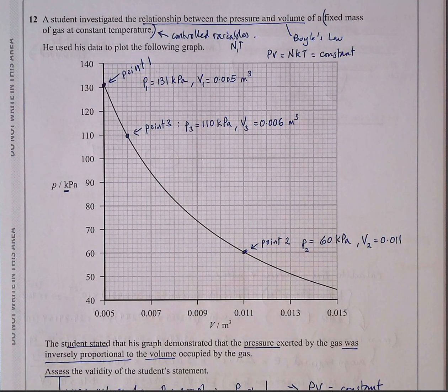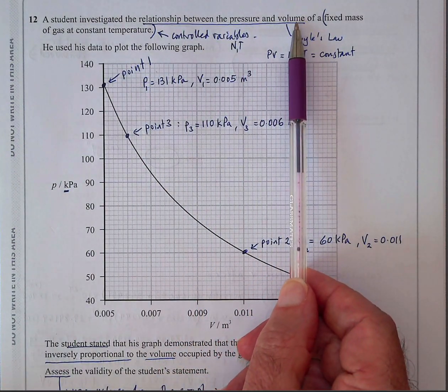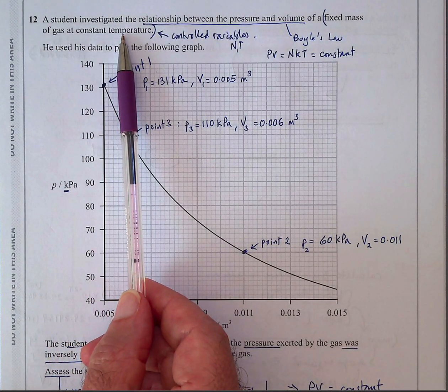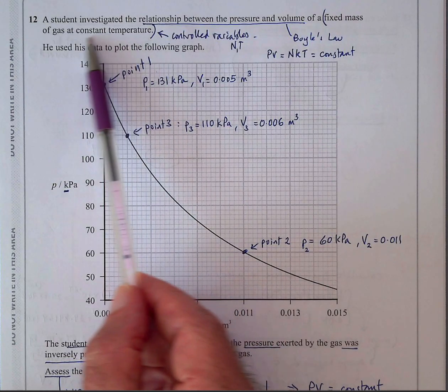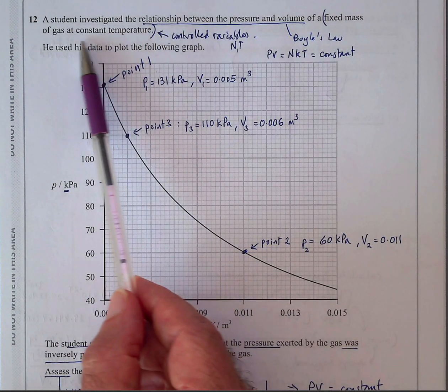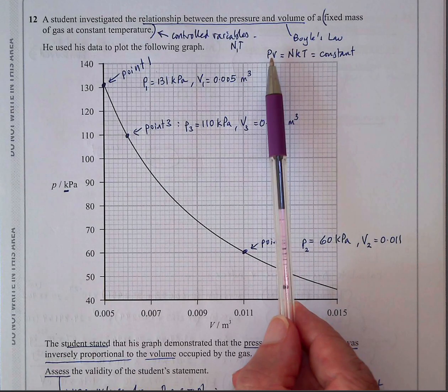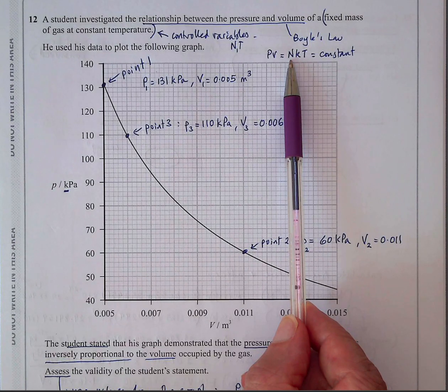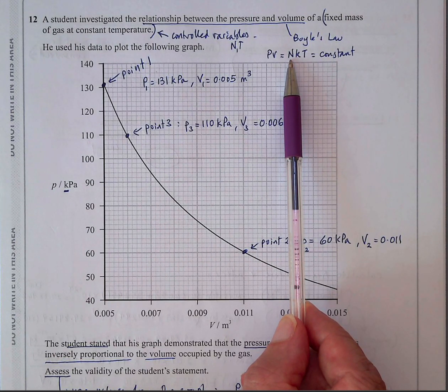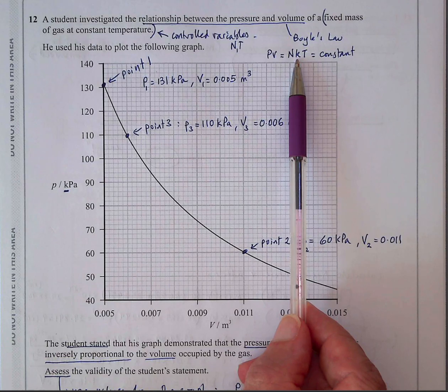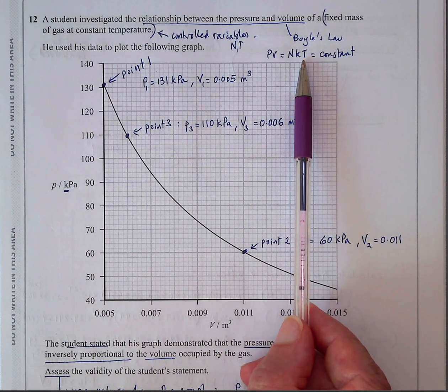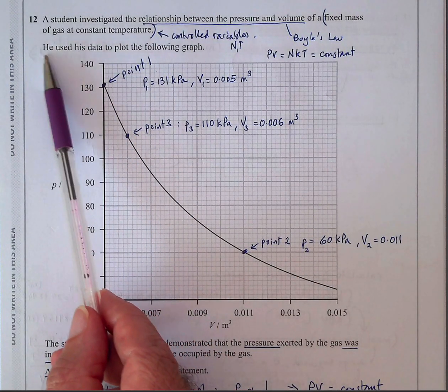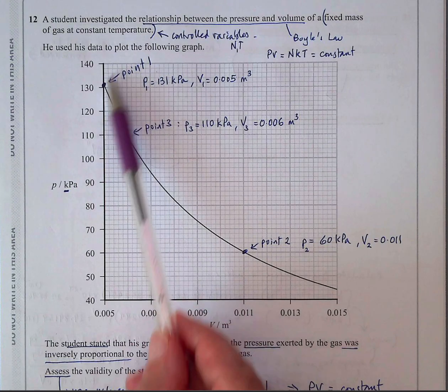Question 12 next. A student investigated the relationship between pressure and volume, so continuing with the same topic of a fixed mass of gas at constant temperature. So we're talking about Boyle's Law. These are controlled variables. Fixed mass of gas at a constant temperature is Boyle's Law. So again, the equation is PV equals NKT, where N is a number of particles in the fixed mass of gas. K is the constant and T is the constant temperature we're using at. So this is the isotherm, this is the constant temperature in the data. He used the data to plot the following graph, so that's Boyle's Law.